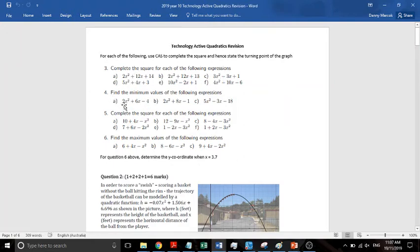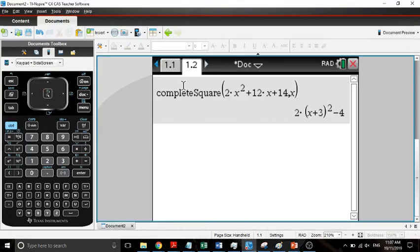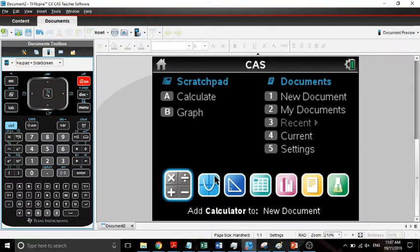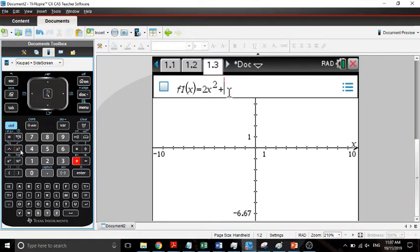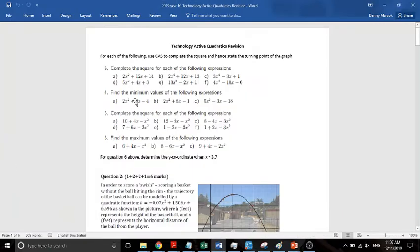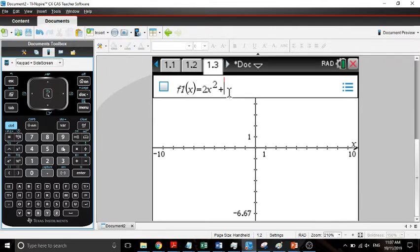Now the next one asks to find the minimum values of the following expressions. To find the minimum value, there's a couple of ways we can go about it. Basically the easiest, most straightforward one is that we graph it. So 2x squared plus 6x minus 4, that's what we're going to graph. We'll go to 2x squared plus 6x, and oh sorry, minus 4.